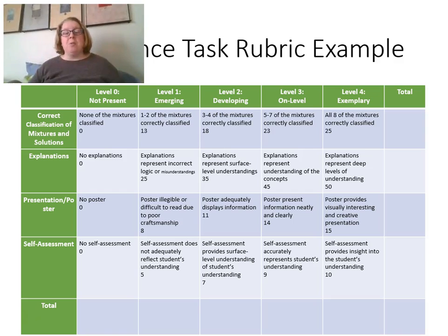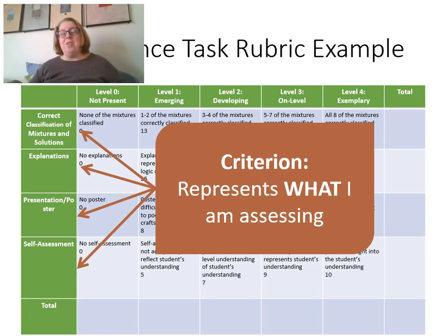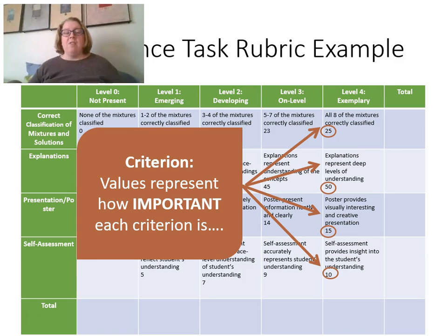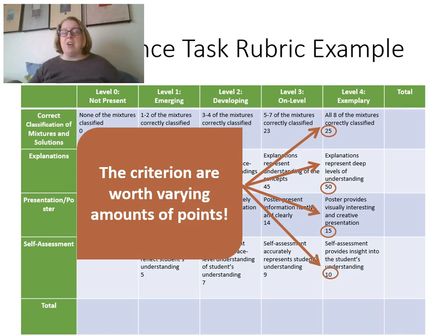Here's a full example. Notice quite a few things about this rubric. There are criteria — this is what I'm assessing — divided into several things. In this project, I asked students to classify different objects into mixtures and solutions, to explain why they were mixtures and solutions, to present this in a poster, and then to do a self-assessment at the end. For each one of these I gave a different value. Notice that the values add up to 100 points total. In your rubric, the point values should add up to 100 to make it easy for yourself, and they're worth a varying amount of points.